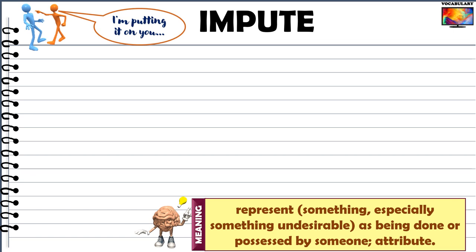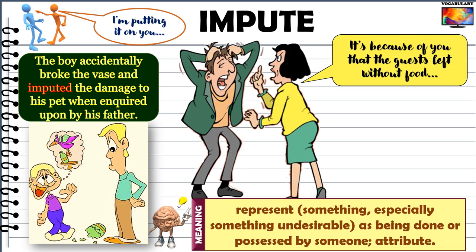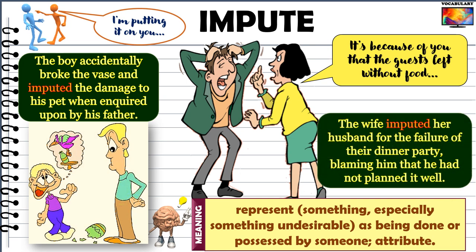Two more examples which will make the meaning of impute crystal clear. The boy accidentally broke the vase and imputed the damage to his pet when inquired upon by his father. Then we have this picture of a husband and wife arguing. The wife is saying, 'It's because of you that the guest left without food.' The wife imputed her husband for the failure of their dinner party, saying he was responsible because he had not planned it well.